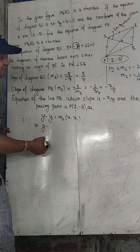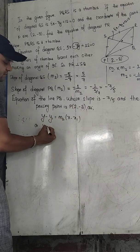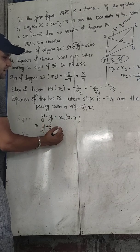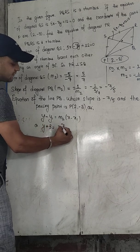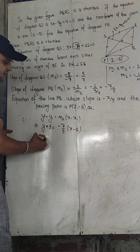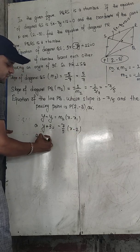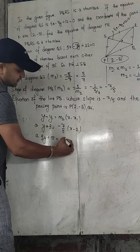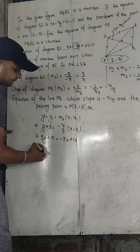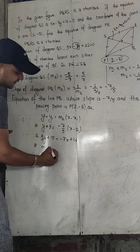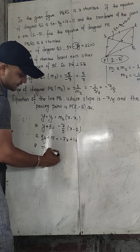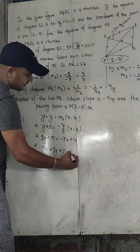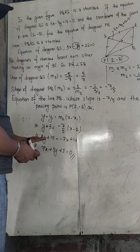So we get Y minus (minus 3) equals minus 7 by 5 times (X minus 2). That is Y plus 3 equals minus 7 by 5 times (X minus 2). Multiplying through by 5: 5Y plus 15 equals minus 7X plus 14. Rearranging: 7X plus 5Y plus 15 minus 14 equals 0, which gives 7X plus 5Y plus 1 equals 0. This is the required equation. This is one way to solve it.